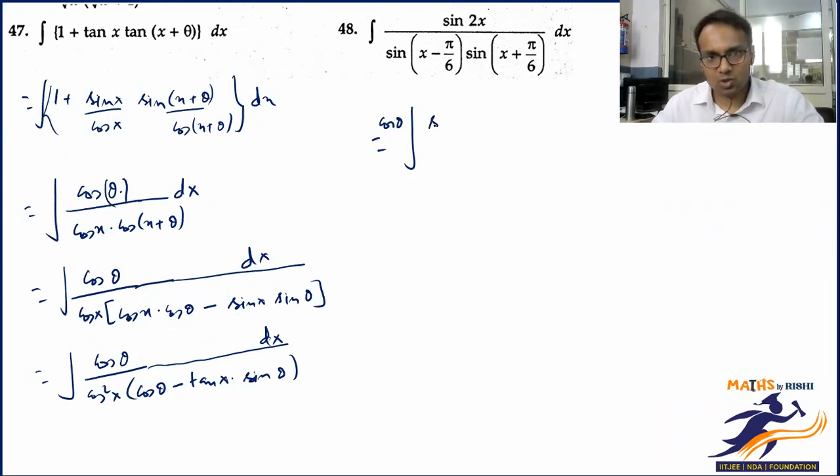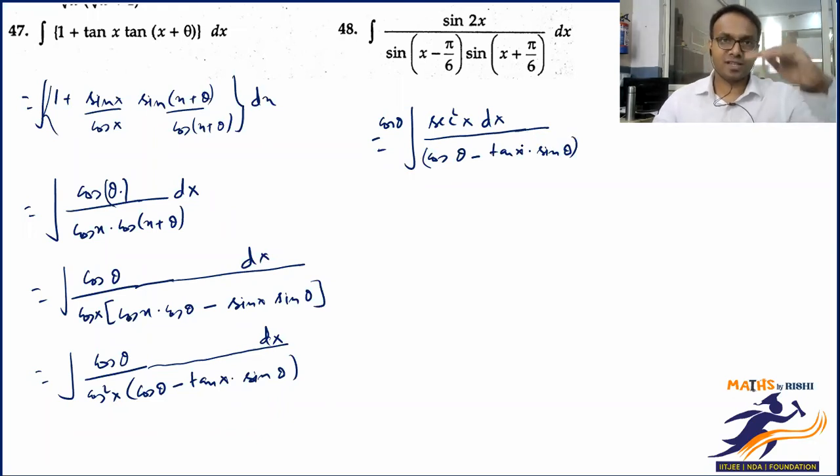So this would give you a cos θ, right? Sin θ was never a problem as that is a constant and I think we are very close to the finishing touch of the question.